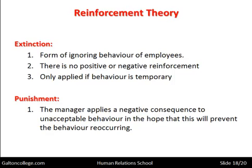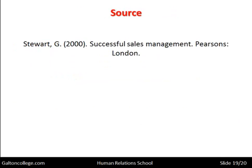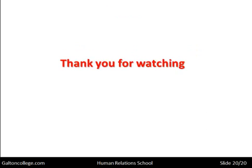So we have positive reinforcement, we have avoidance, we have extinction, and we have punishment. These are used to either promote good behaviour or deter bad behaviour. That's all we're going to deal with in this class, so thank you for watching.